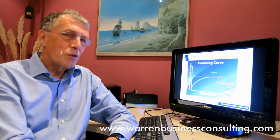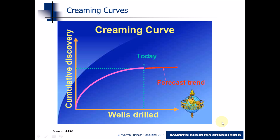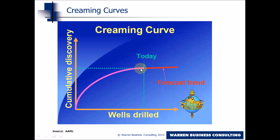So what do I mean by that? If we look at this curve over here, you can see I've made a display where the y-axis represents the total amount of oil and gas found in the basin, and the x-axis tells you the number of wells that have been drilled in the basin. The curve in the middle shows how the cumulative resource discovered in the basin has grown over time as extra wells have been drilled.